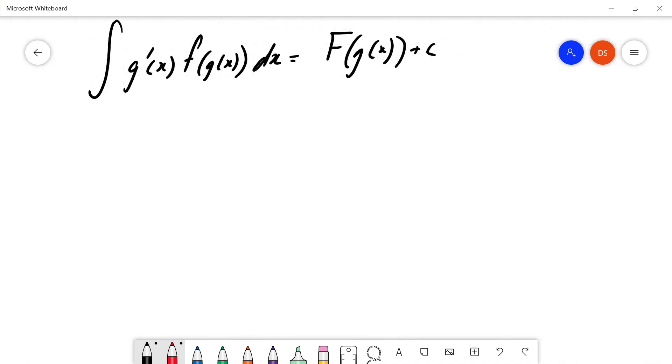Which is quite nice in the sense that this g dash at the front doesn't matter because it cancels off. So, let's have another look using this rule. Since the derivative of the inside is on the outside, I just integrate this.